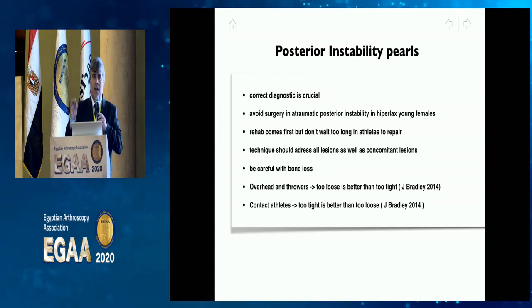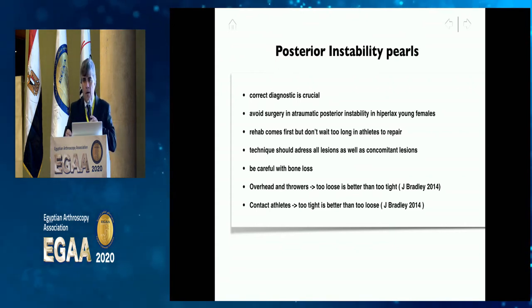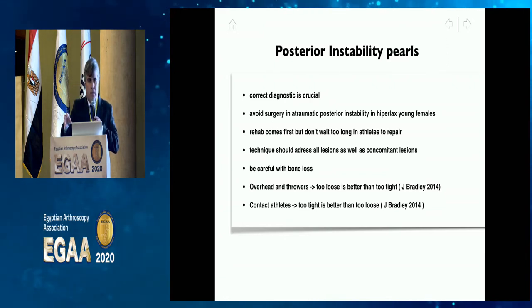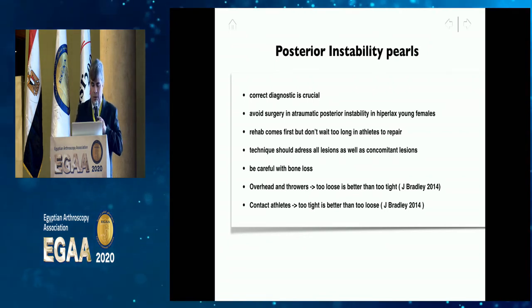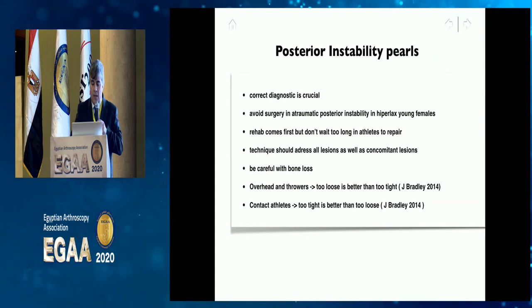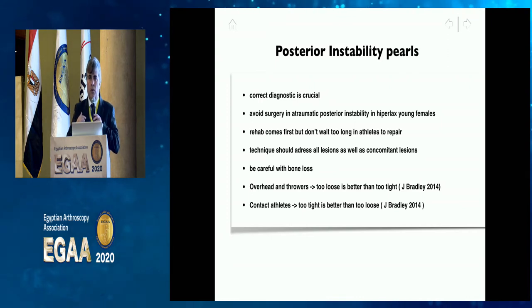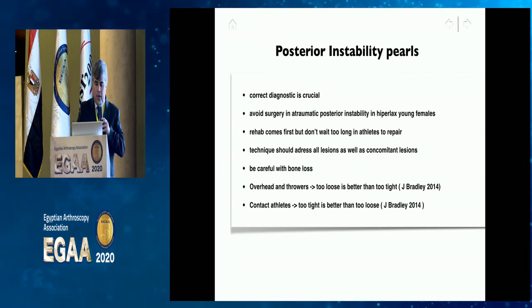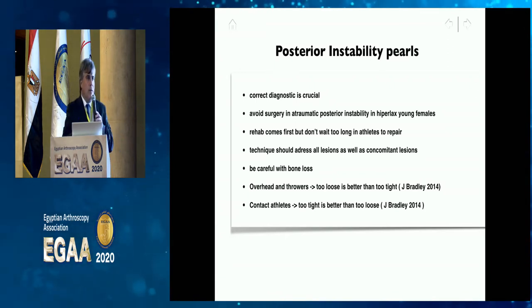Avoid surgery in atraumatic posterior instability in hyperlax young females — operating on them can lead to more problems. Rehab comes first, but don't wait too long in athletes: if the athlete is damaging his career, and there is a clear labral detachment, bone loss, or clear structural alteration posteriorly, it may be good not to wait too long, as the literature shows they will likely eventually need surgery anyway.